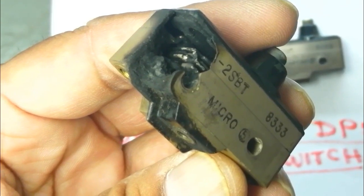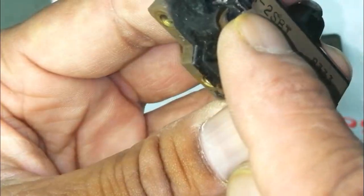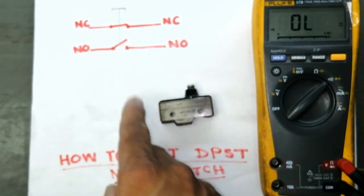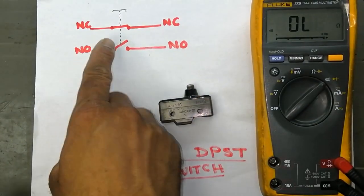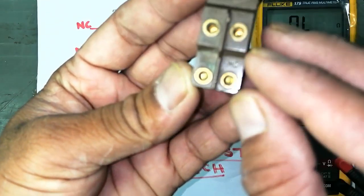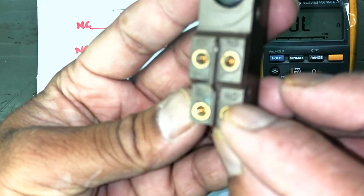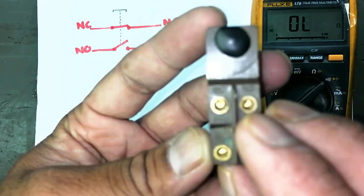We can see it is damaged, so I will show you how it is working physically. It has four points. If we see, these two points are normally closed and these two are normally open.